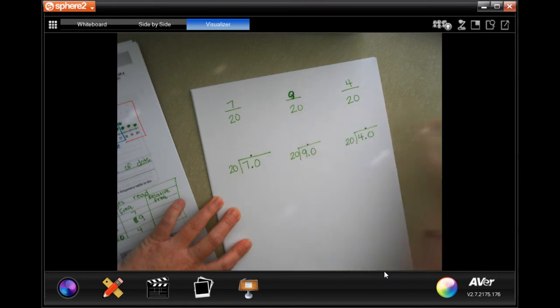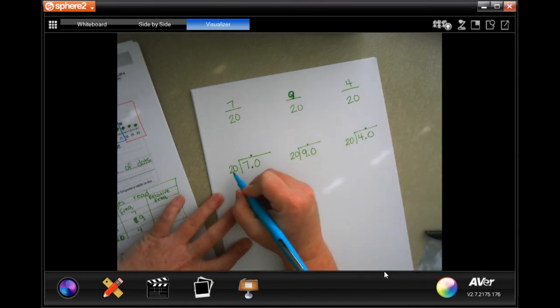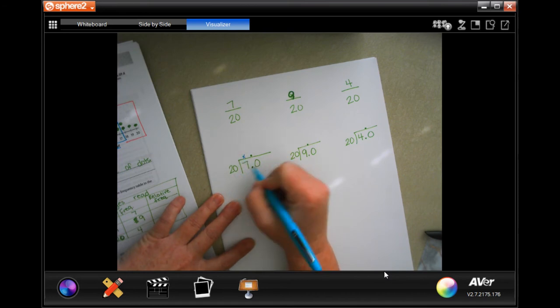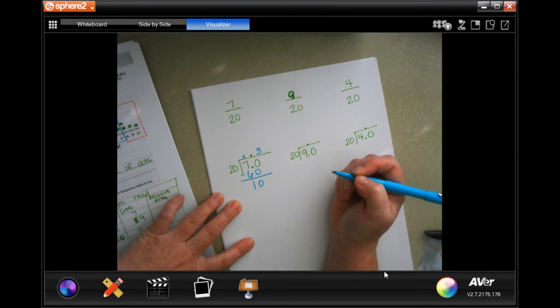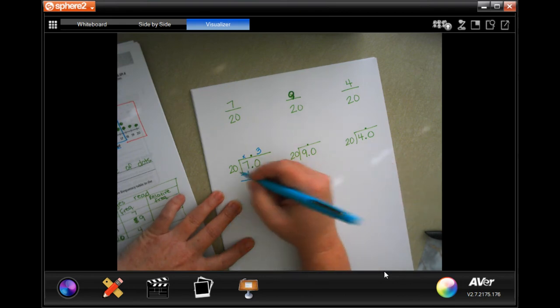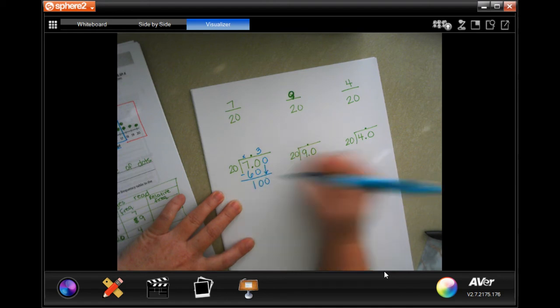We're going to bring our decimal up first thing so that we don't forget it. So 20 is not going to go into seven, but it'll go into 70 three times. Three times 20 is 60. Subtract and get 10. Now 20, 10 is smaller than 20, so I'm going to add a zero and I'm going to bring it down.